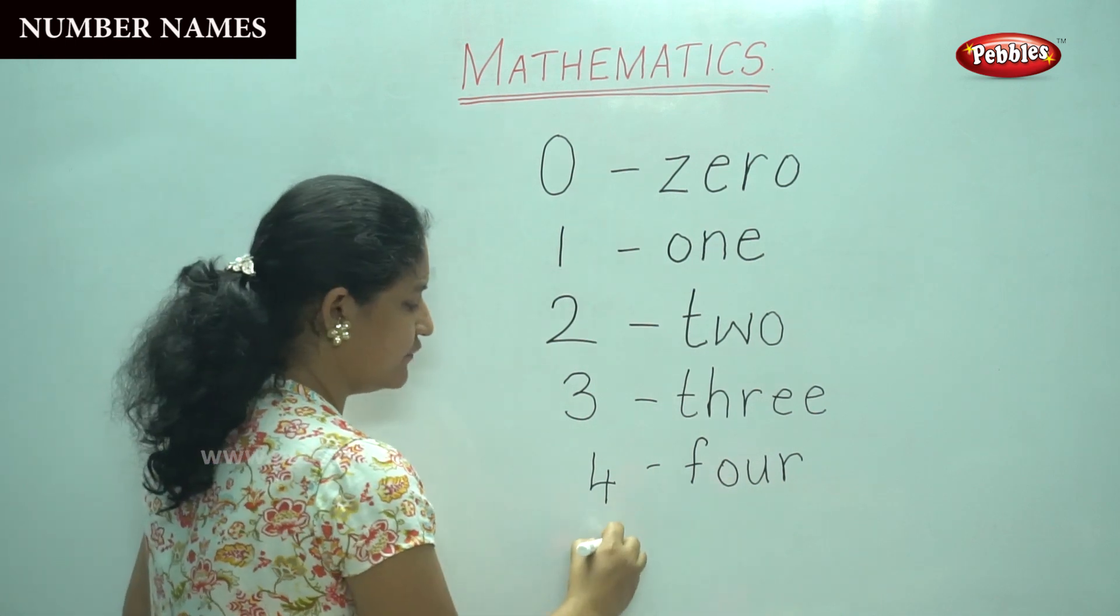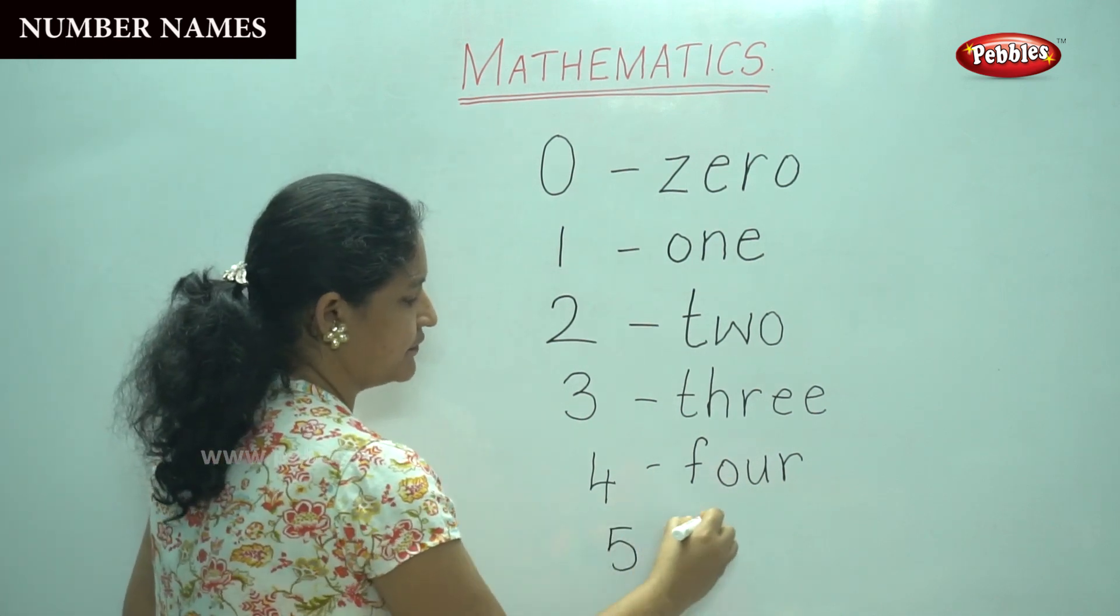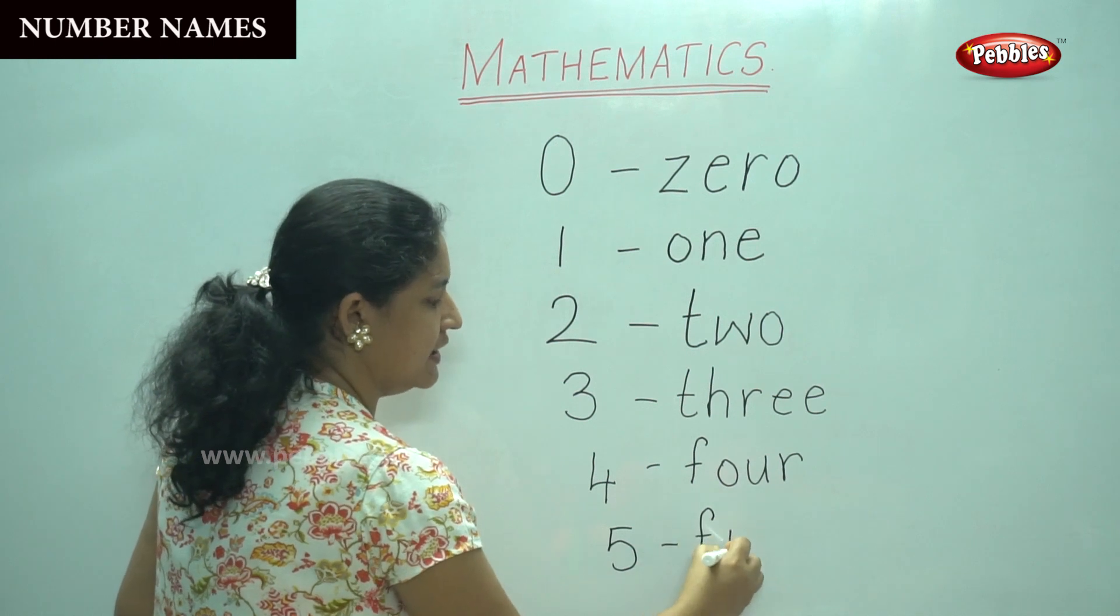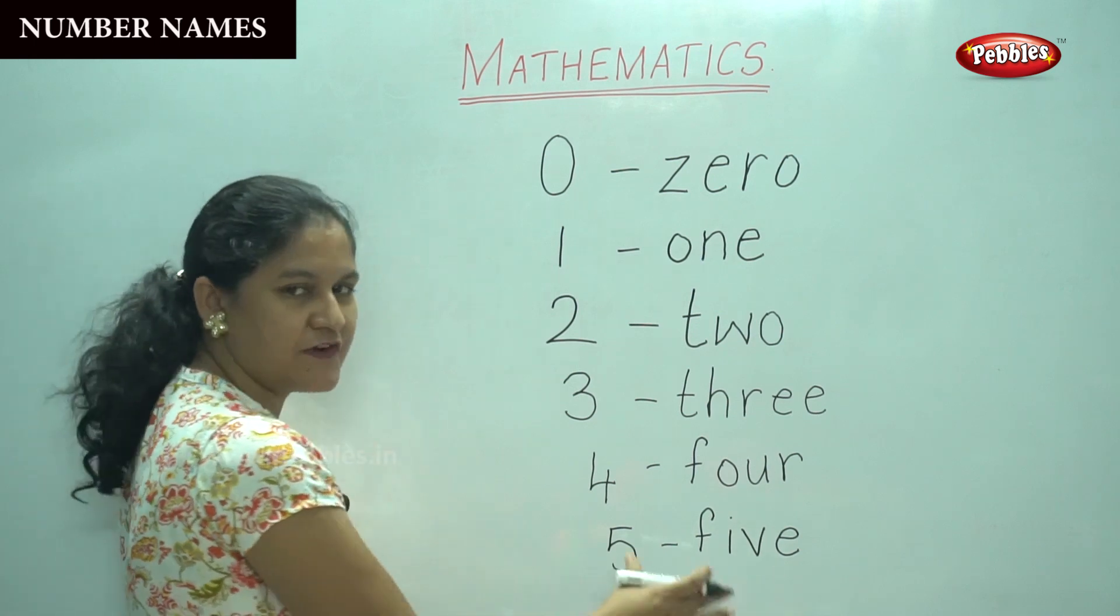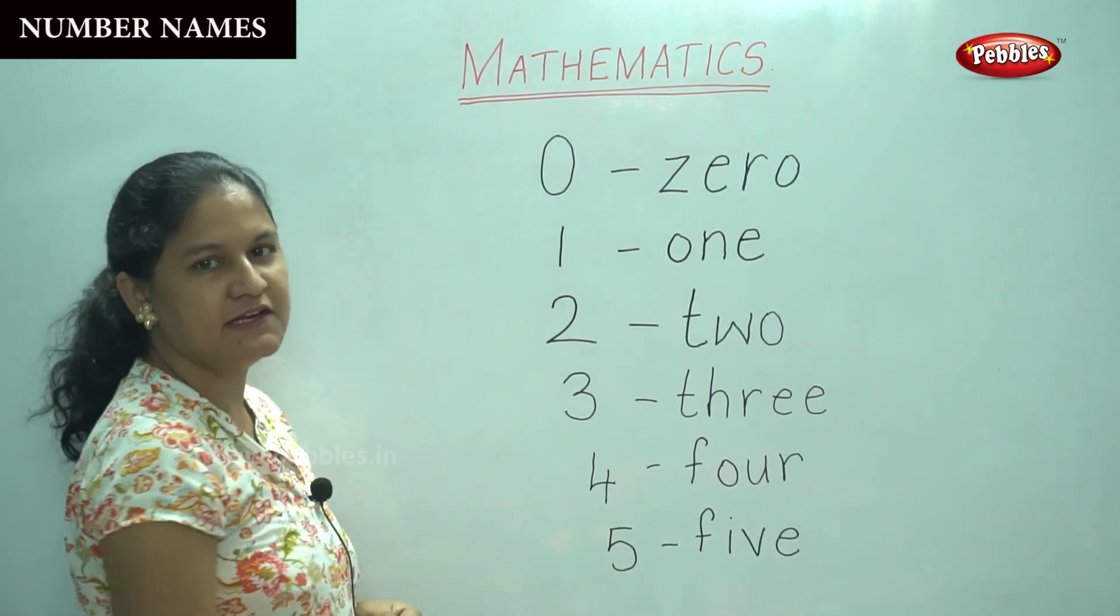So next number 5: F-I-V-E, 5. This is number 5. So shall we go again from the beginning?